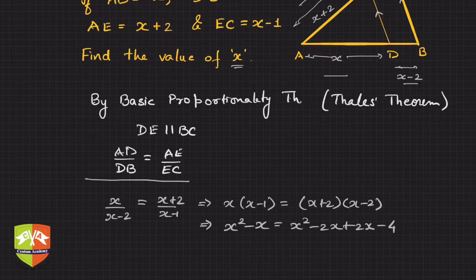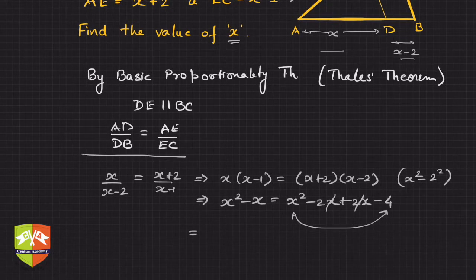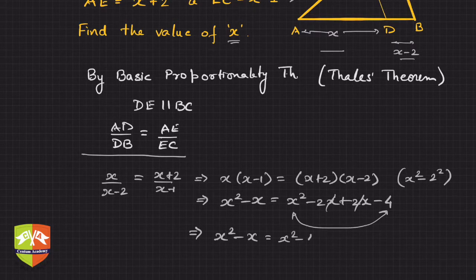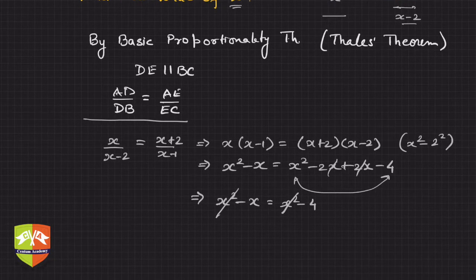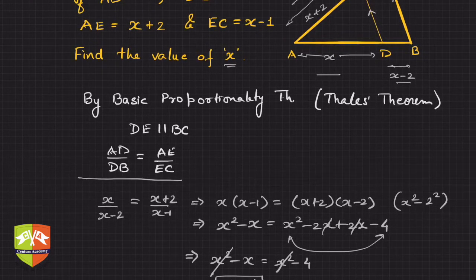Notice that the 2x terms cancel on the right side, so this becomes: x squared minus x equals x squared minus 4. The x squared terms cancel, giving x equals 4. Easy, right?